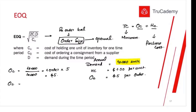How is that calculated? Total annual demand divided by order quantity, multiplied by ordering cost per order — that gives us $5. For the holding cost, we take the average inventory. If we place only one order throughout the year, we start with 10,000 units and keep using inventory on a weekly or monthly basis until it reaches zero at year end. So we take an average: 10,000 divided by 2.